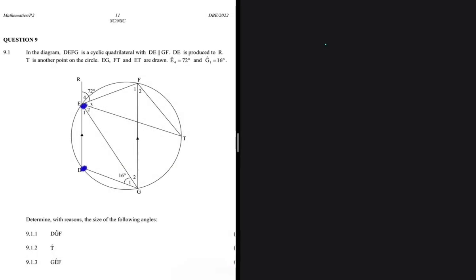DEFG is a cyclic quadrilateral, so we have a cyclic quad - that's a keyword because there's a few properties with regards to a cyclic quad. Then DE is parallel to GF, so we have DE that is parallel to line GF.